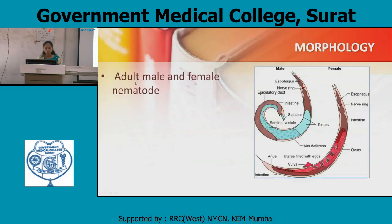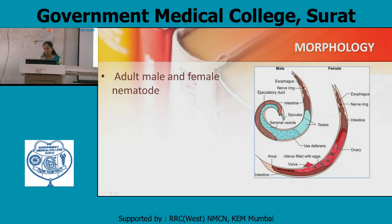Morphology of the adult worm — male and female. The male has an esophagus, nerve ring (between esophagus and intestine), testis, vas deferens, seminal vesicle, and ejaculatory duct. The female has the same esophagus, nerve ring, and intestine, but instead of testis, an ovary is present. The uterus is filled with eggs, vulva is present, and there is an anus. The female worm is larger than the male.